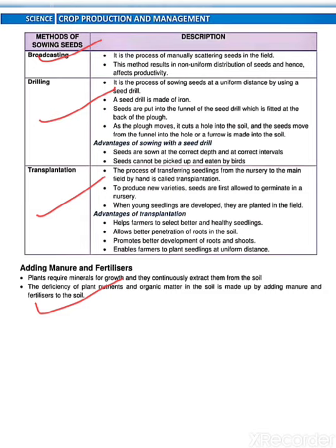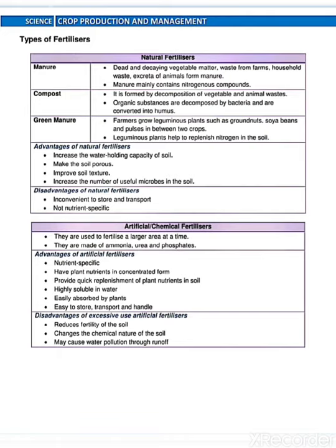Now adding manure and fertilizer. Plants require minerals for their growth. The deficiency of nutrients and organic matter in the soil is made up by adding manure and fertilizer to the soil. Types of fertilizers — manure, compost and green manure — these are the natural fertilizers. Advantages: increase the water holding capacity of the soil, make the soil porous, improve soil texture and increase the number of useful microbes in the soil. Disadvantages: inconvenient to store and transport, and not nutrient specific.